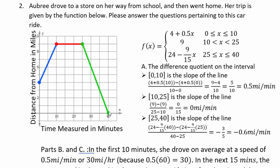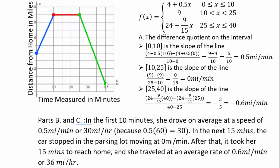So you can see the physical significance of difference quotient here. In the first 10 minutes, you drove an average speed of 0.5 miles per minute, which is 30 miles an hour, probably because it's city streets. In the next 15 minutes, the car was stopped moving zero miles per minute. And then it took 15 minutes to reach home at an average speed of 0.6 miles per minute or 36 miles per hour.